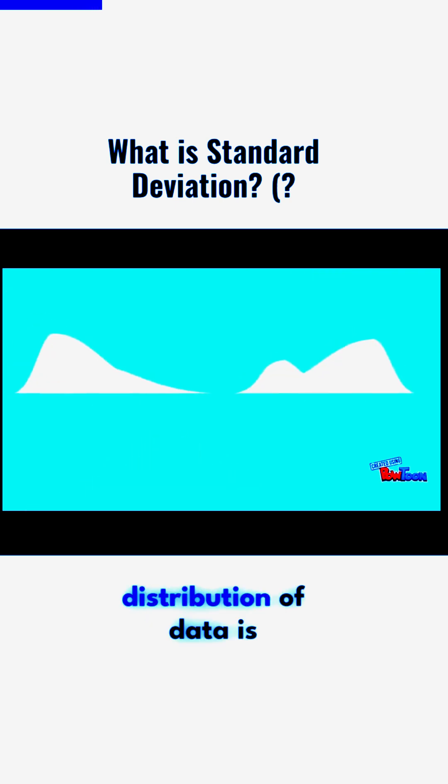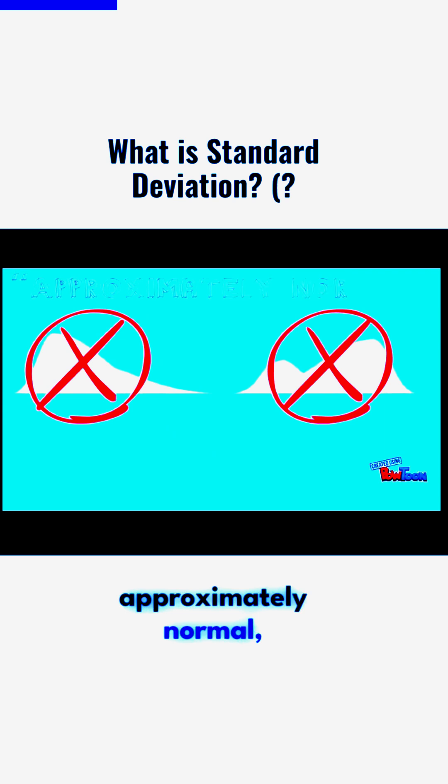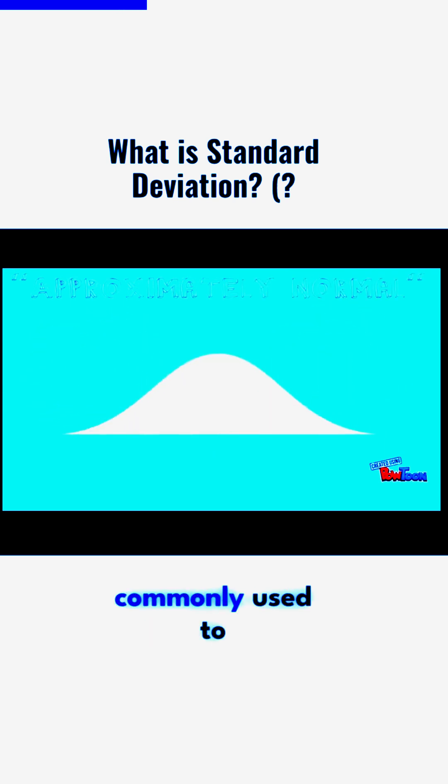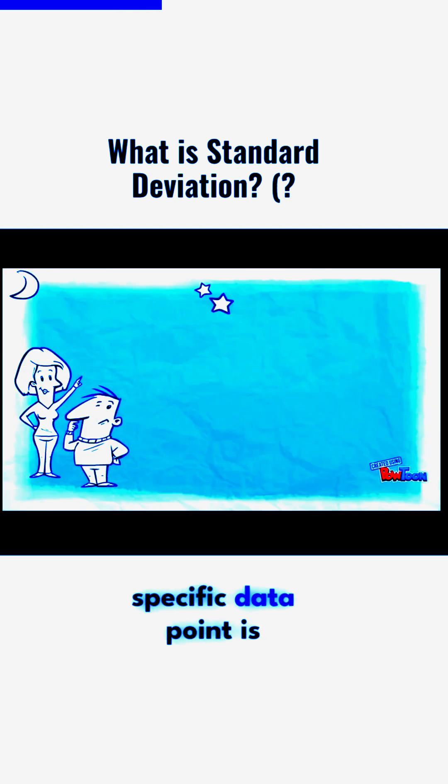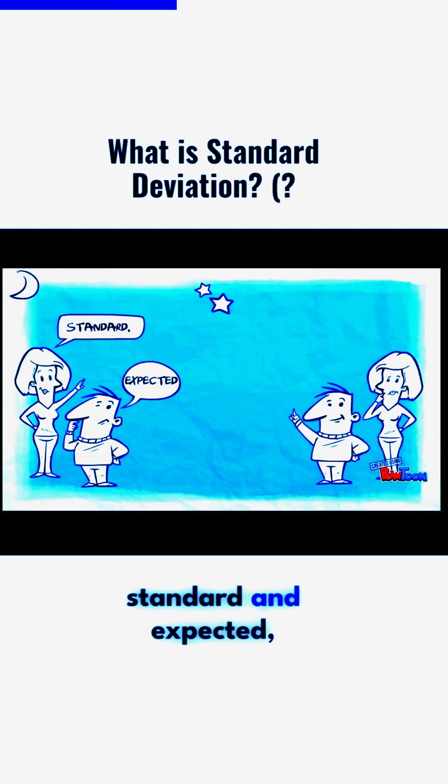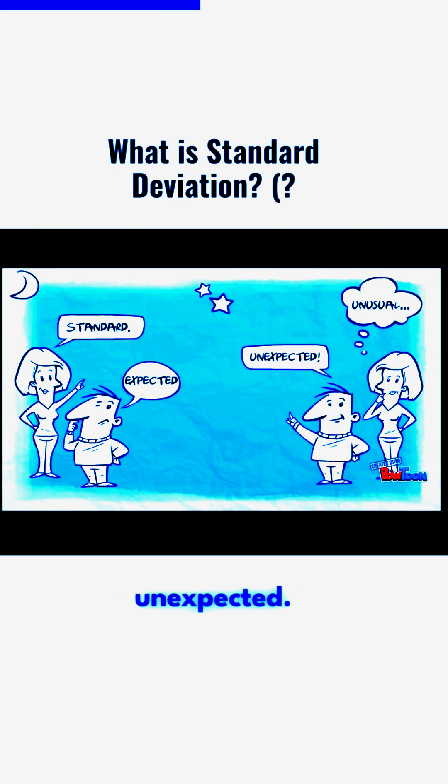Standard deviation is used when the distribution of data is approximately normal, resembling a bell curve. It's commonly used to understand whether a specific data point is standard and expected or unusual and unexpected.